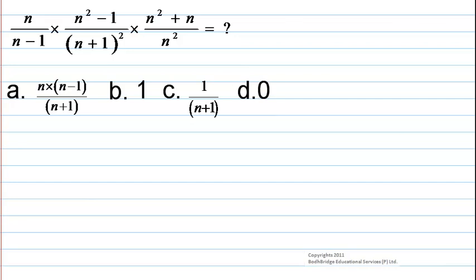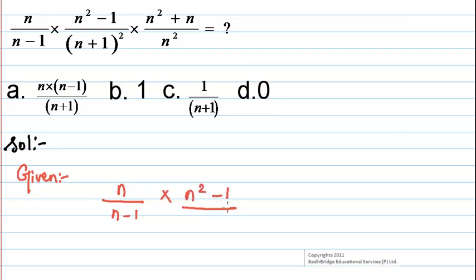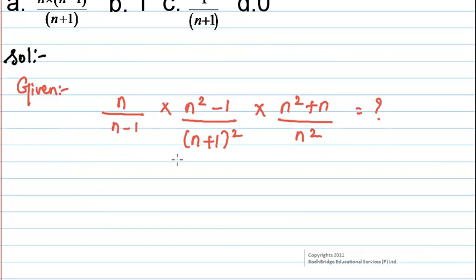The expression given is: n/(n-1) multiplied by (n²-1)/(n+1)² multiplied by (n²+n)/n². The given options are: (a) n(n-1)/(n+1), (b) 1, (c) 1/(n+1), and (d) 0. We want to find the value we will get if we solve this expression.